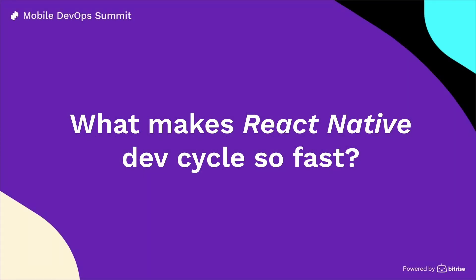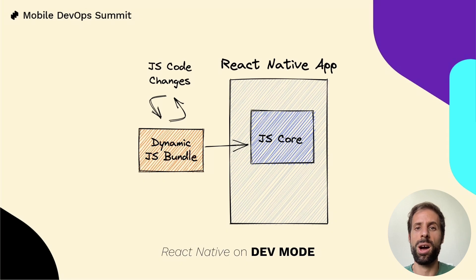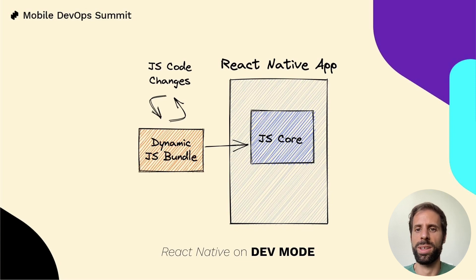It's fair to ask: what makes React Native's dev cycle that fast? React Native's ability to show changes in your app as soon as you save the file is possible thanks to its architecture. So let's take a look under the hood. Here we have a simplified explanation of how React Native works. Of course many things are missing in this diagram, but it's enough to understand what's coming later in this talk.